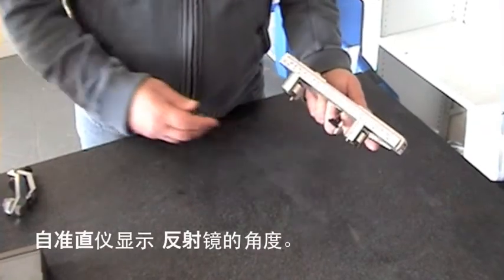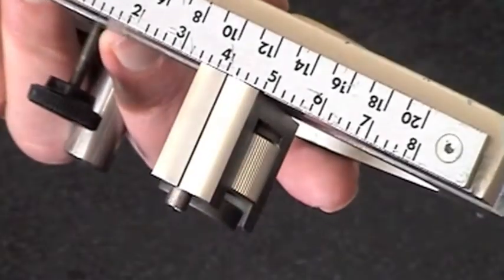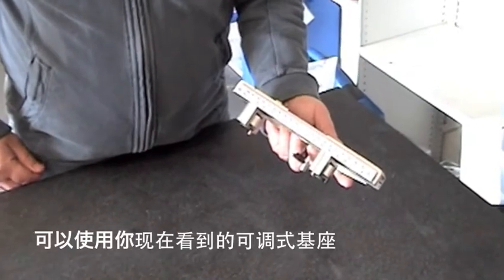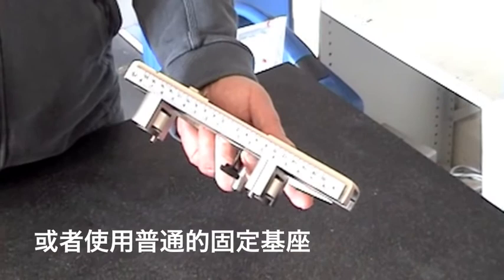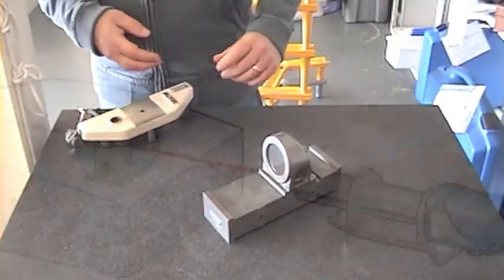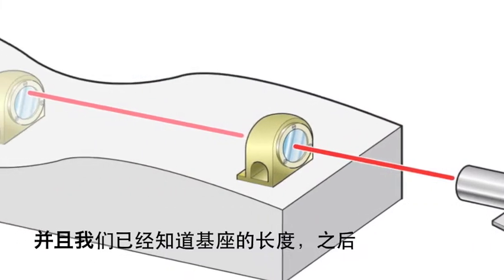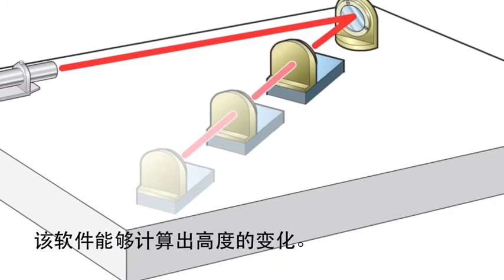As we said earlier, the autocollimator gives you the angle of the mirror. What we have to do is sit this mirror onto a base, either an adjustable base as shown here or an ordinary fixed base. So if the autocollimator gives us the angle and we know the length of the base, then the software can calculate the height changes.